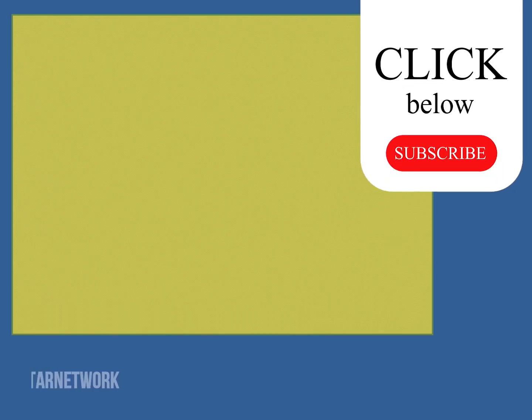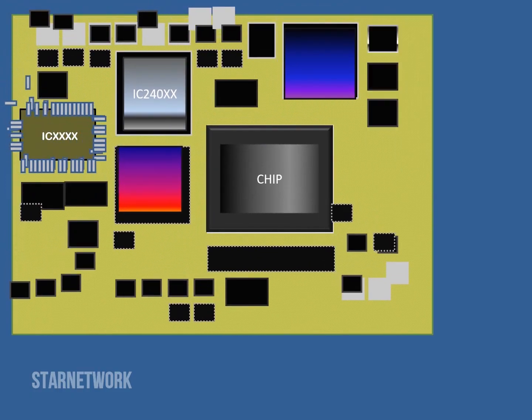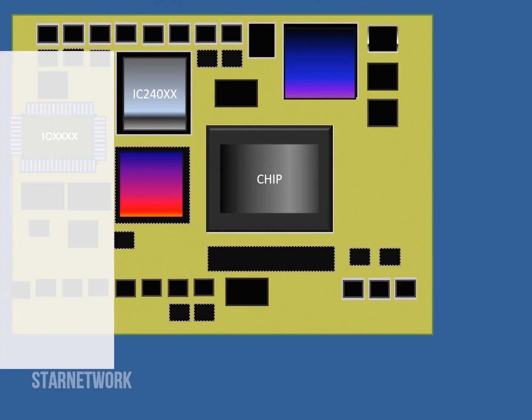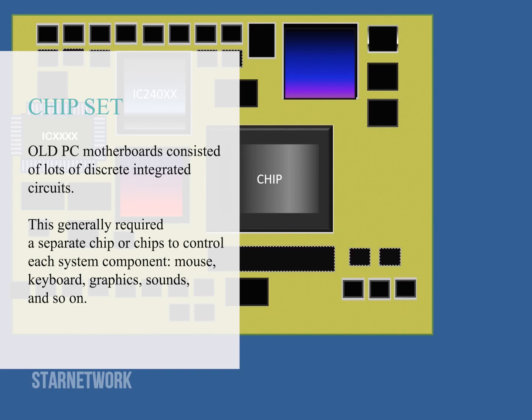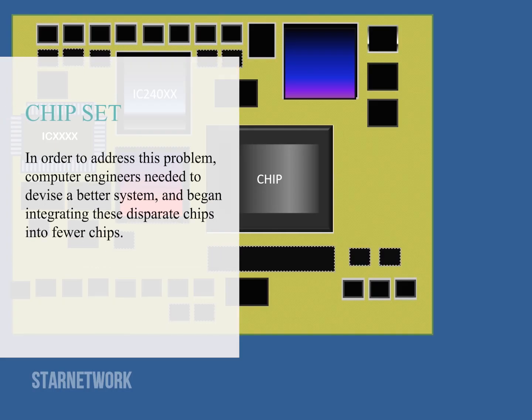Back in the times of old computers, PC motherboards consisted of tons of separate integrated circuits. This commonly required a separate chip or chips to switch each system component — mouse, keyboard, graphics, sound, and so on. Taking all those various chips scattered about was pretty inefficient.